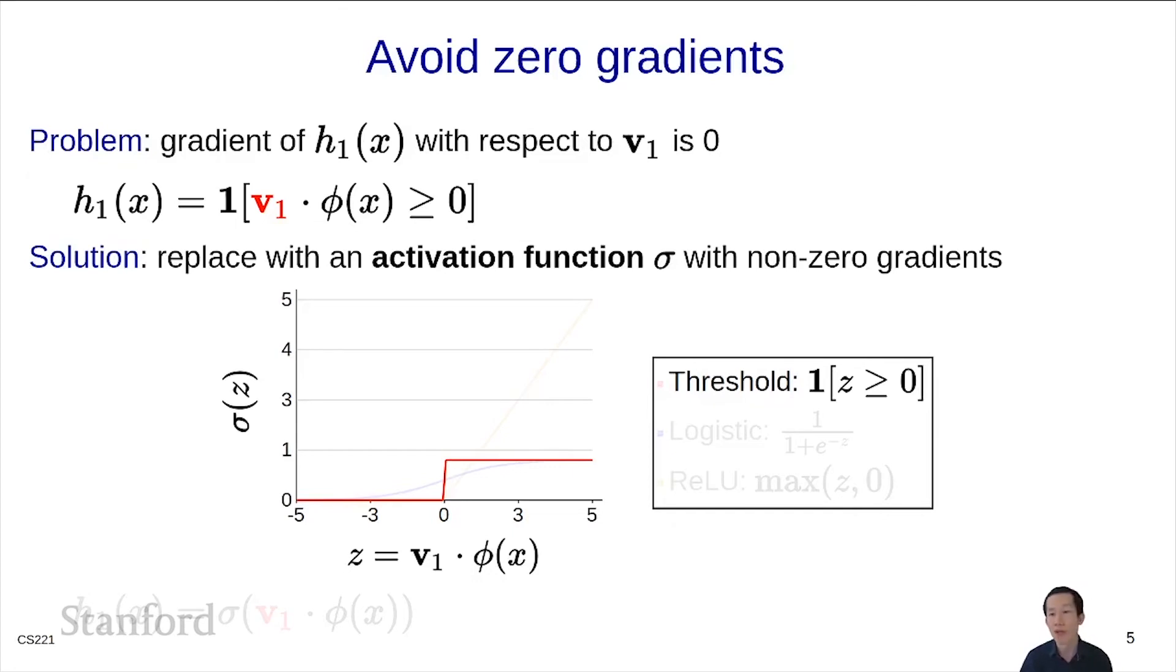The solution is to replace the threshold function with a more general activation function σ which has friendlier gradients. Classically, in the 80s and 90s, people used the logistic function as the activation function, which is a smooth version of the threshold function. Its gradients are 0 nowhere, which is good.